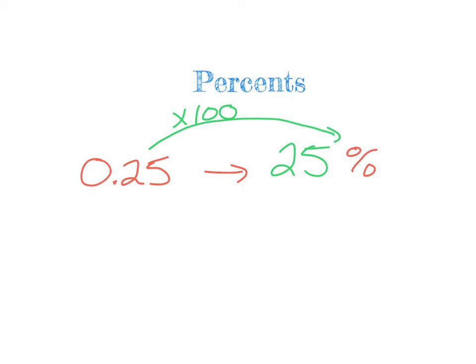Anytime you multiply by 100 — or really any exponential of 10 — the decimal moves. If you multiply by 10, the decimal moves one place to the right. Multiplying by 100 moves it two places to the right. So if you don't want to use your calculator every time, just remember: two places right.